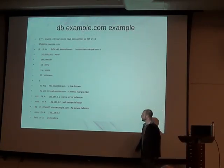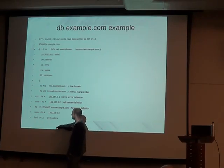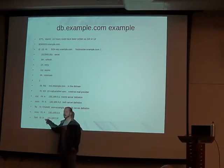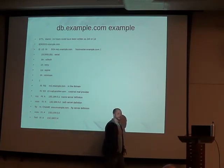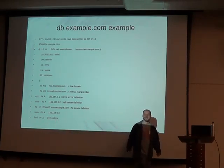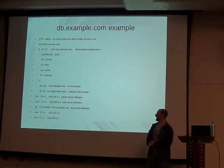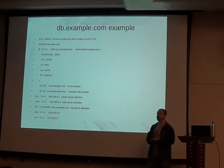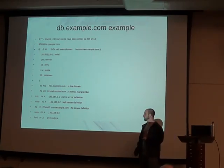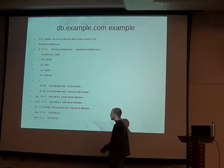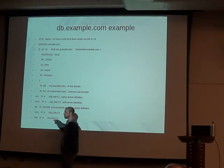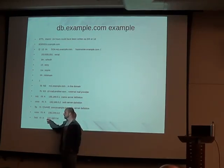Another record we didn't talk about is AAAA — four A's in a row. Four A's in a row is the IPv6 address record. So if your hostname is pointing to an IPv6 address, you would put the four A's.